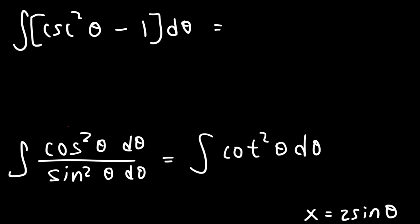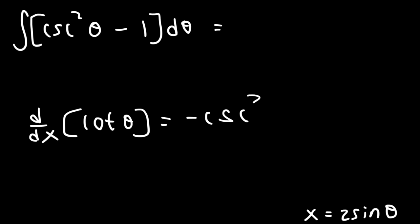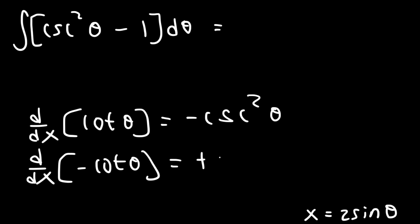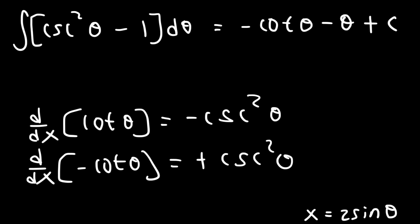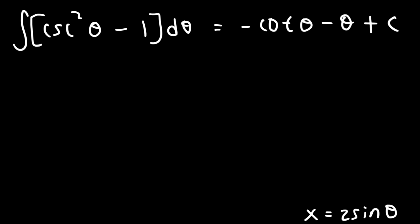What is the antiderivative of cosecant squared? The derivative of cotangent is negative cosecant squared, so the derivative of negative cotangent is positive cosecant squared. Therefore the antiderivative of positive cosecant squared theta is negative cotangent theta. And the integral of negative 1 d theta is simply negative theta. Right now we're close, but we still need to replace theta with some x variable.